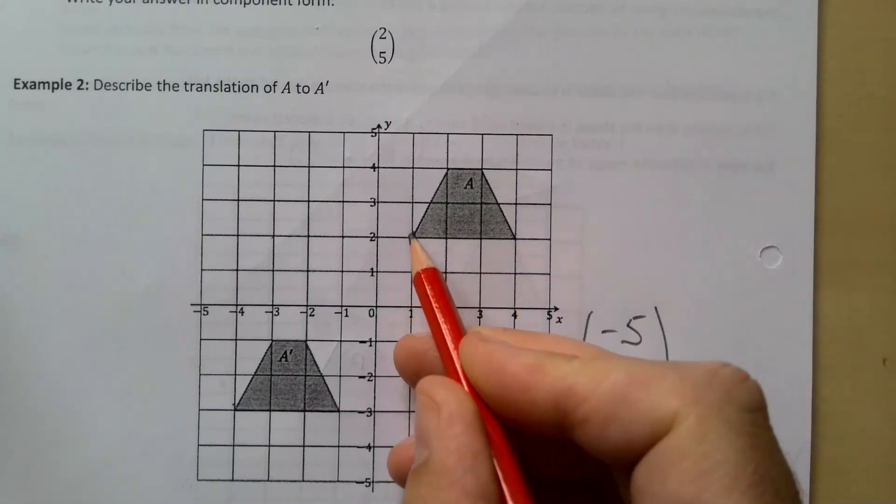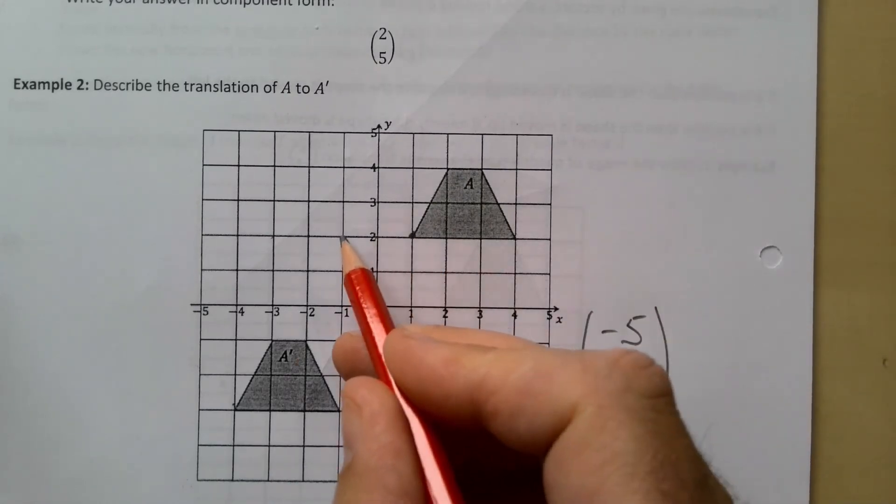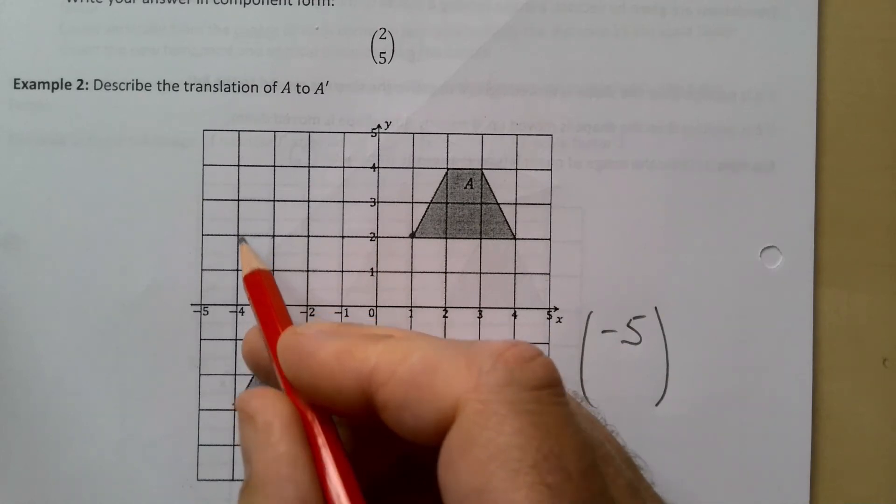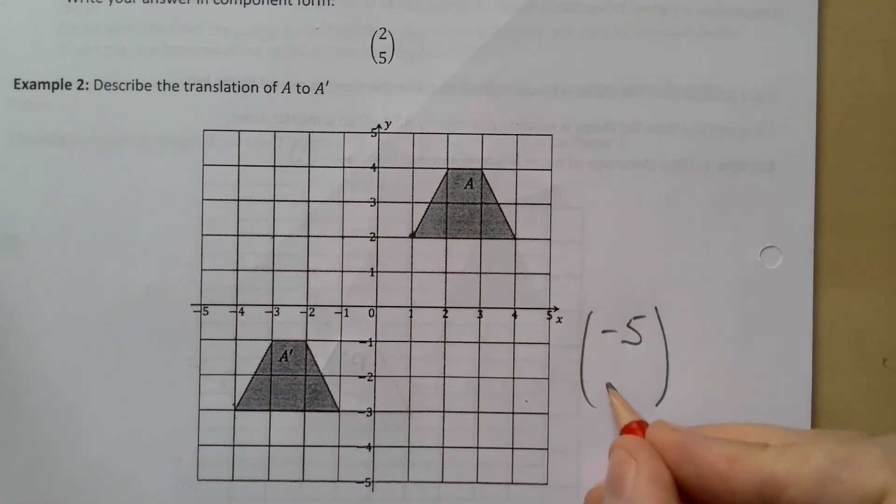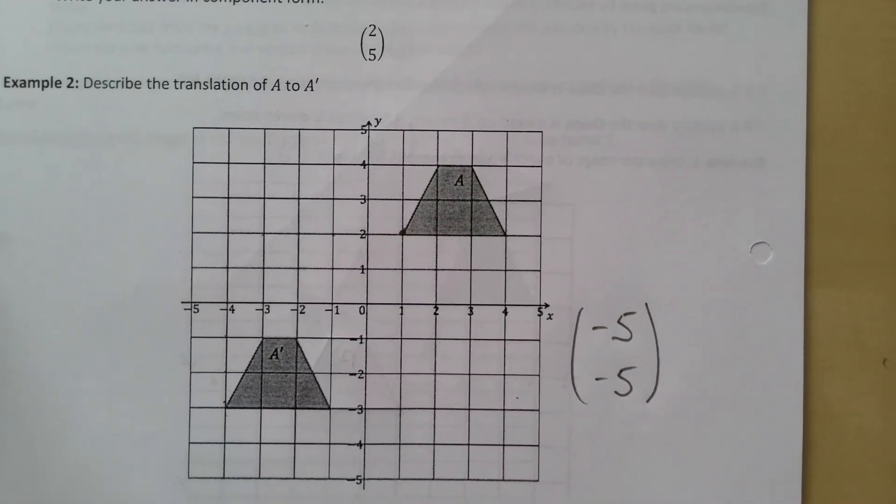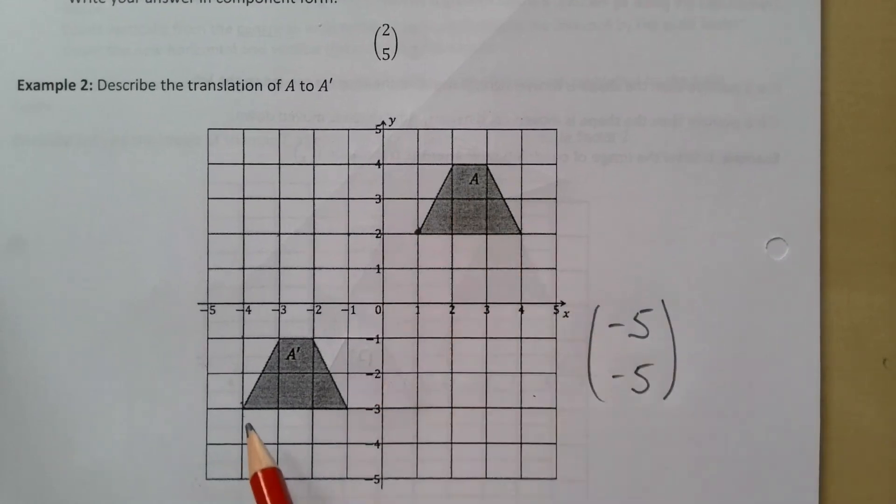And then how many am I going down? So I've gone 1 2 3 4 5, and then 1 2 3 4 5, so it's five down as well. Remember because down is negative, so the translation that takes me from A to A dash is (-5, -5).